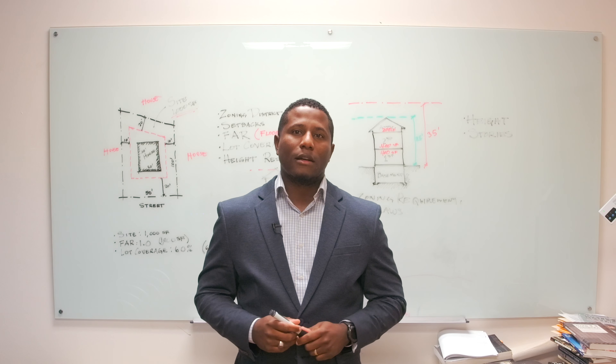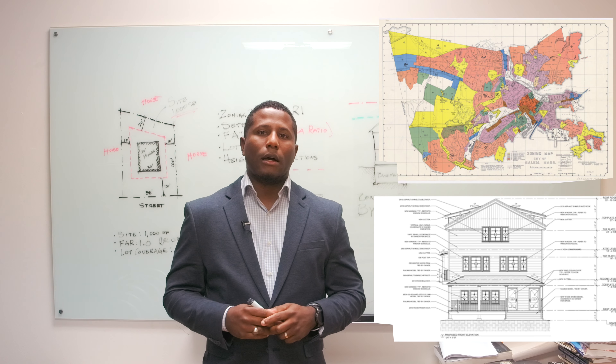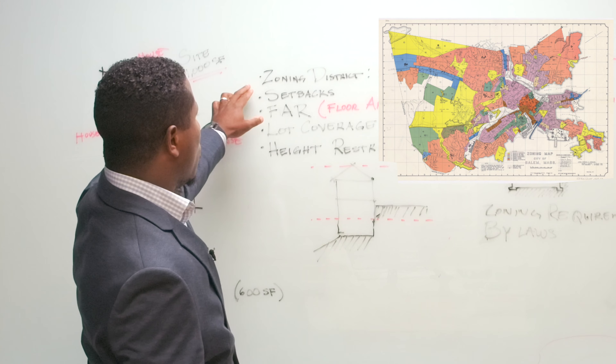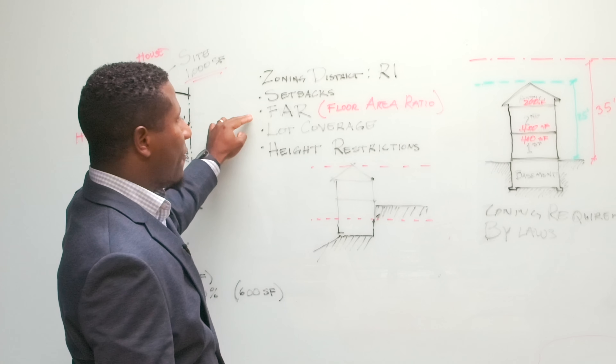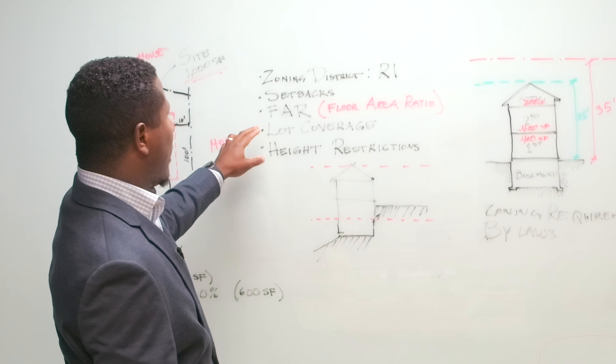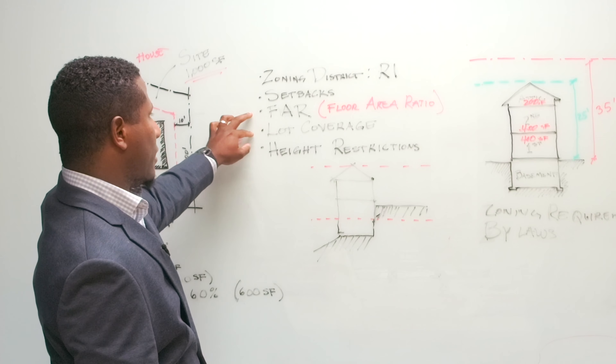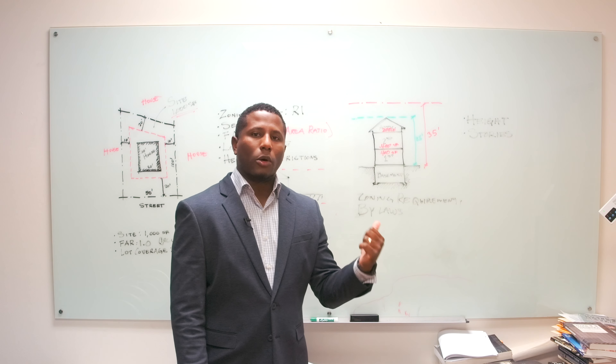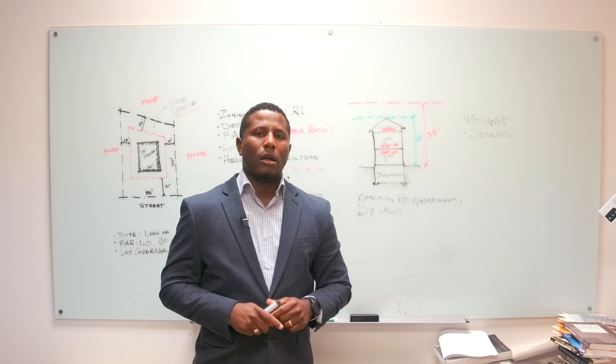Marco Severino here at Flow Design Architects, one of the principals. We're going to continue today to discuss our video series on zoning requirements. In this class, we're going to focus on height restrictions. As you already know from our previous YouTube videos, we went into detail to talk about zoning districts, setbacks, FAR or Floor Area Ratio, and lot coverage and the difference between FAR and lot coverage. If you don't know what I'm talking about, just refer to the previously recorded video to get a sense of where we are within this series.